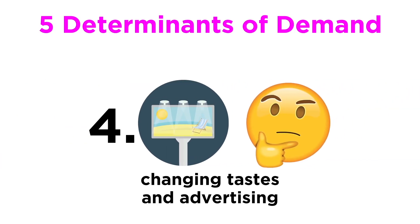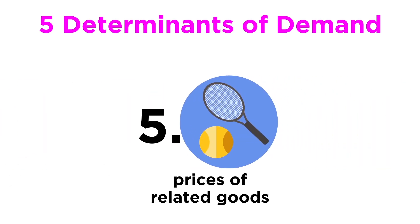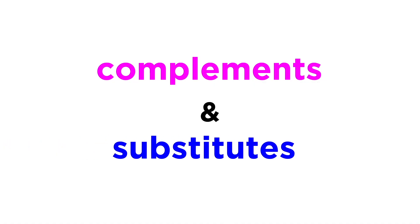Number four: changing tastes and advertising. Keeping up with social trends and general preferences helps predict what demand will look like. And finally, number five: prices of related goods. Demand can simply shift in response to a change in the demand for another related good. There are two types of related goods that interact in this way — complements and substitutes.